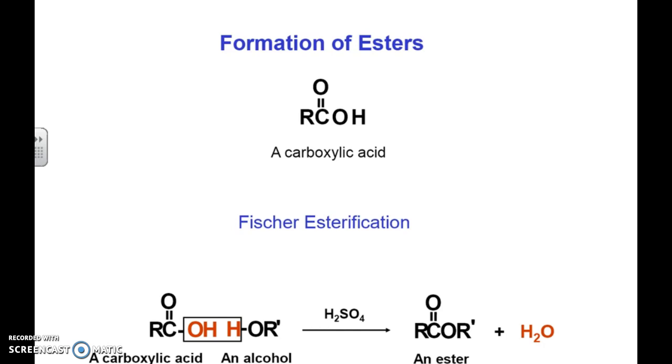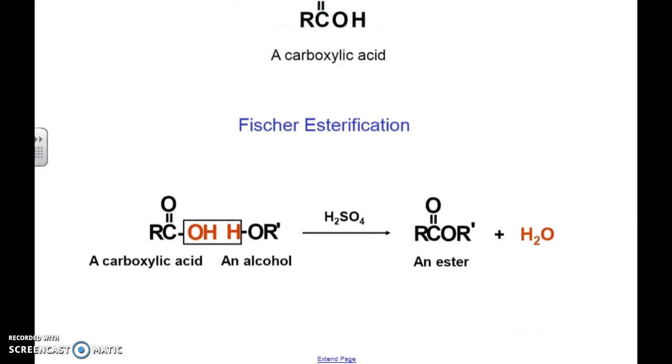When we're making esters, we take an alcohol and a carboxylic acid, which we can see here on the left. What we do is called dehydration. This takes place under the influence of acid as our catalyst, and we produce an ester and H2O.